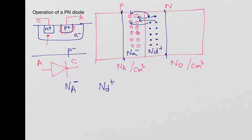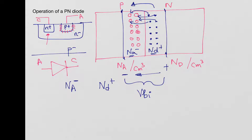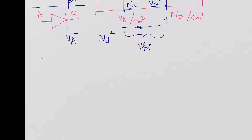The process stops because once you have ND plus exposed on the N side and NA minus on the P side, an electric field is built up — plus on one side, minus on the other. This electric field opposes further movement of electrons from the N side to the P side. A potential is built across this region, called the built-in potential, VBI, which stops further movement of electrons from the N to the P side.